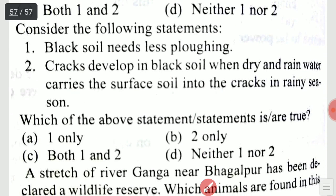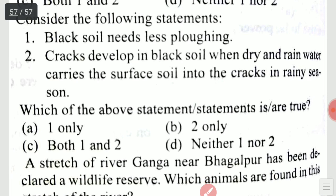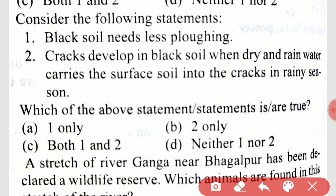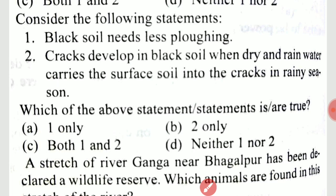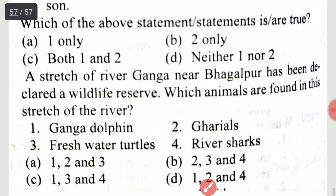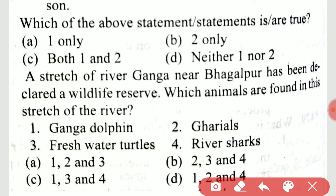Consider the following statements: black soil needs less ploughing; cracks develop in black soil when dry and rainwater carries the surface soil into the cracks in the rainy season. Both 1 and 2 are correct. A stretch of river Ganga near Bhagalpur has been declared a wildlife reserve — which animals are found in this stretch? It is the Gangetic dolphin, gharials, and freshwater turtles.